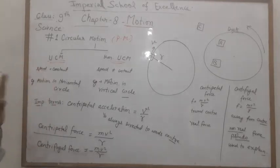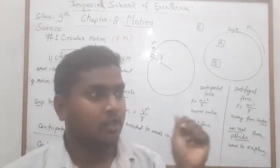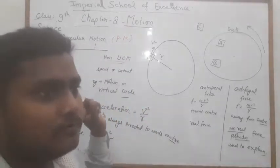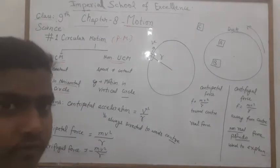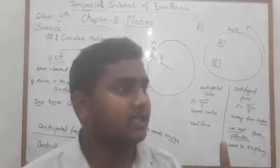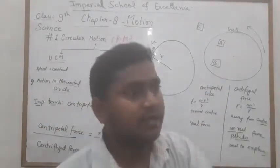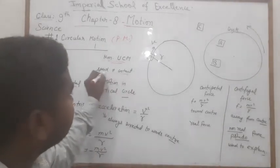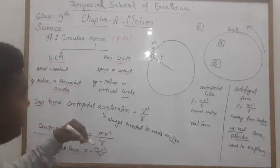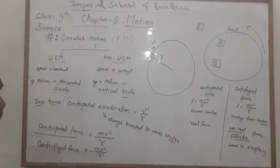In circular motion, if the speed of the body remains constant, it is called uniform circular motion. An example is motion in a horizontal circle. Non-uniform circular motion is when the speed is not constant. Motion in a vertical circle is an example of non-uniform circular motion.